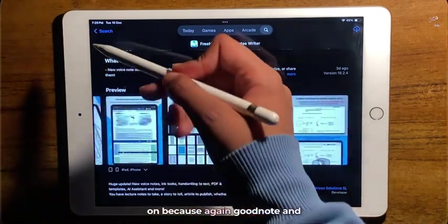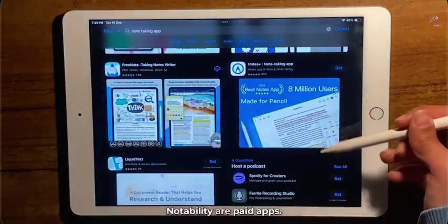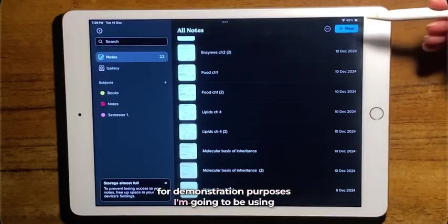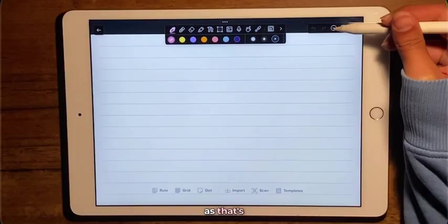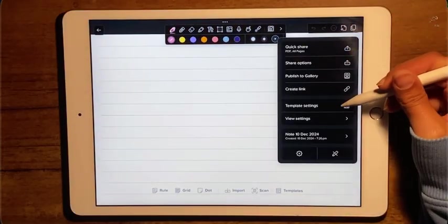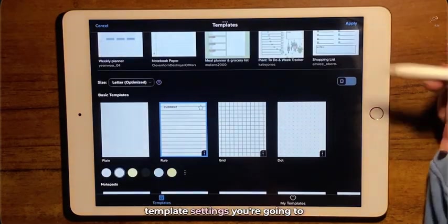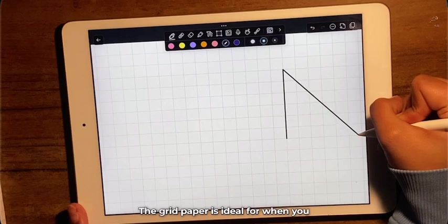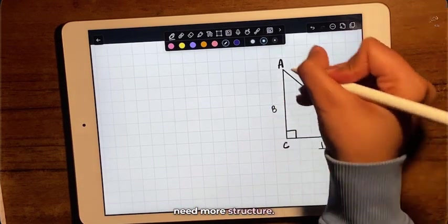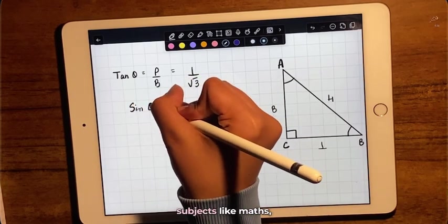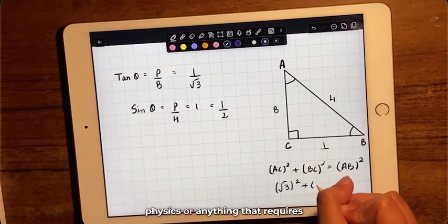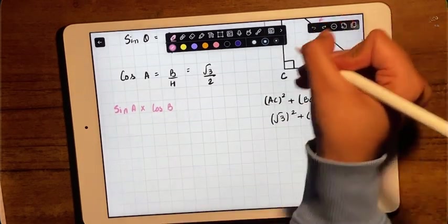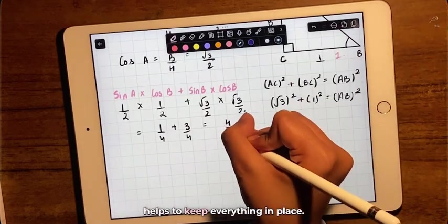All right, so let's create your first note. For demonstration purposes, I'm going to be using Notability, as that's the app which I use daily. When you click on template settings, you're going to find different types of paper options. The grid paper is ideal for when you need more structure. It's especially useful for subjects like maths, physics, or anything that requires precise diagrams, charts, or graphs. The uniform grid helps to keep everything in place.